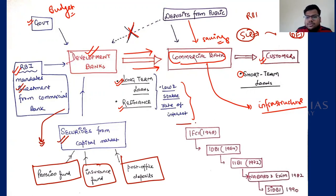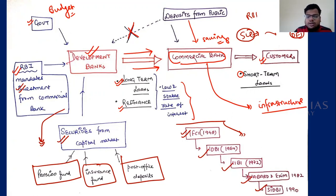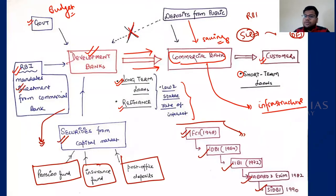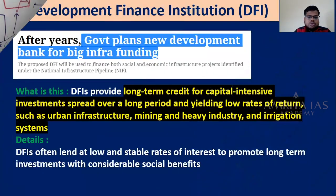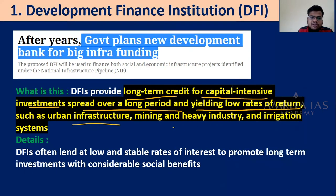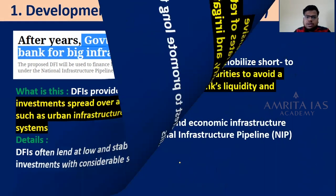Post-independence, India started with these development banks: the first was IFCI, then IDBI, IIBI, NABARD, EXIM, and SIDBI. In 1991, the Narasimham Committee decided these developmental banks were no longer required; many were converted into universal banks (e.g., IDBI), and a new category — All India Financial Institutions (AIFIs) — was created including NABARD and EXIM Bank. DFIs provide long-term credit for capital-intensive investments like urban infrastructure, mining, and heavy industry, lending at low and stable rates to promote long-term investment with considerable social benefits.